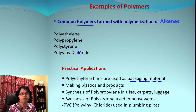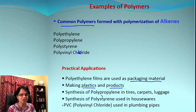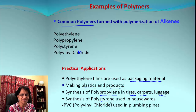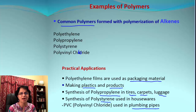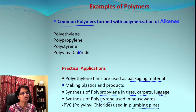Polypropylene is used in tires, carpets, and luggage. Polystyrene can be used in housewares. PVC — polyvinyl chloride — is used in plumbing pipes. So polymerization has not only opened up a new branch of organic chemistry but also has a wide variety of practical applications.